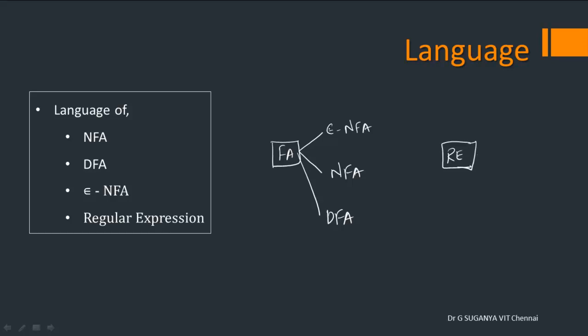So coming from regular expression to finite automata, among this, which is convenient for the user to convert. Is it epsilon NFA, NFA, or DFA? Yes, we have understood the fact that epsilon NFA is the most convenient way of representation by the user.